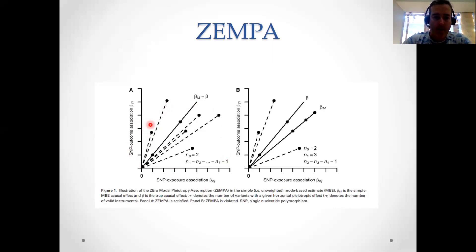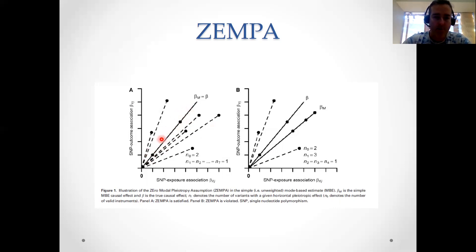So let's imagine that our graph looks a little bit like this. We've got seven groups of SNPs, and it just so happens that in this particular group we've got two SNPs that sit on the same line. The biggest group has two SNPs, so we choose that to be our estimate of the causal effect, beta m.